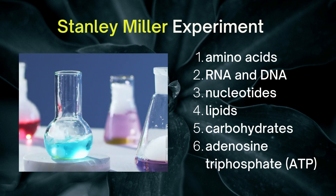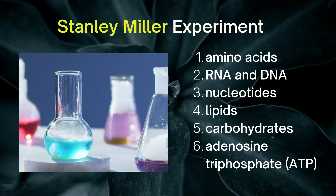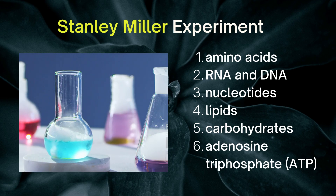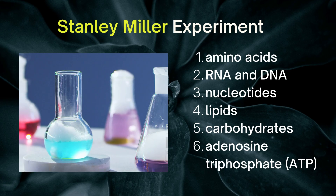Using a slightly different combination of starting molecules, Miller and other scientists were able to generate many amino acids, RNA and DNA nucleotides, lipids, carbohydrates, and adenosine triphosphate or ATP.